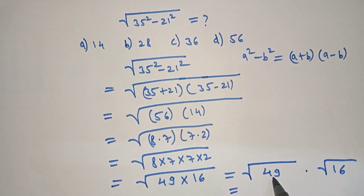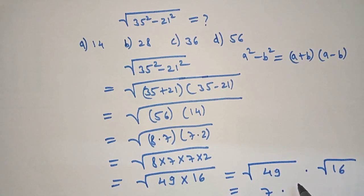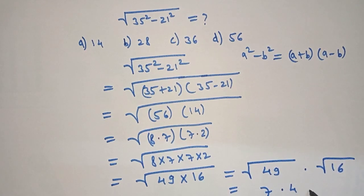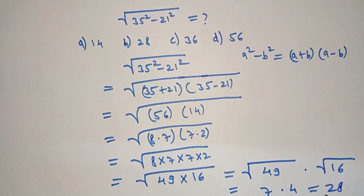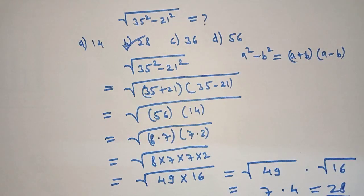Which is equal to square root of 49 is 7 into square root of 16 is 4, which equals 28 because 7 into 4 is 28. This is our right answer, option B is our right answer.